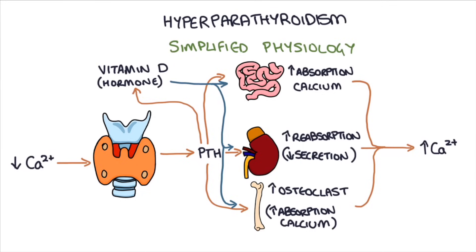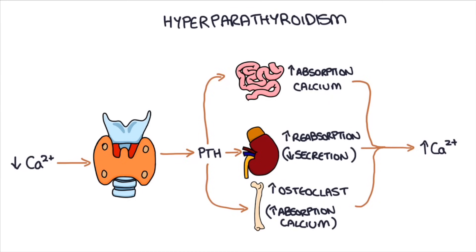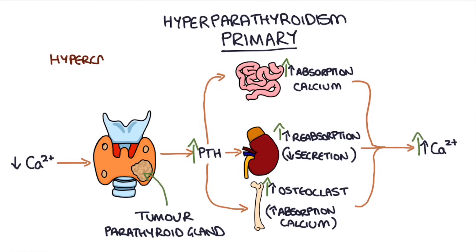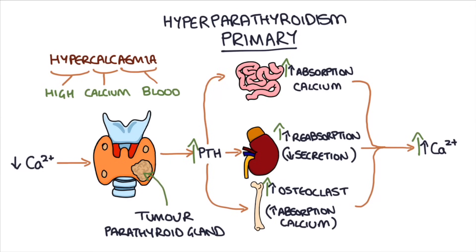So vitamin D acts basically alongside parathyroid hormone to raise the blood calcium level. A deficiency in vitamin D could therefore lead to a low calcium level. Now let's talk about hyperparathyroidism. The easiest cause to explain is primary hyperparathyroidism, which is caused by uncontrolled parathyroid hormone being produced by a tumour of the parathyroid glands. This causes increased absorption of calcium and leads to hypercalcemia — an abnormally high level of calcium in the blood — and can be treated using surgical removal of the tumour.